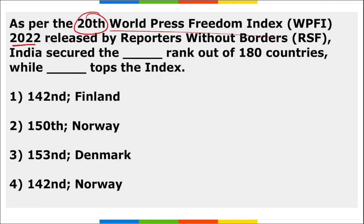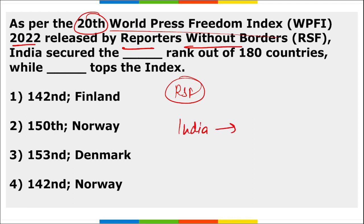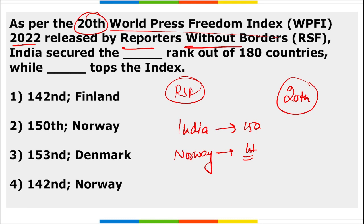The 20th World Press Freedom Index was released by Reporters Without Borders. India's rank in this index is 150. Norway topped the index at first position. This was the 20th edition of the World Press Freedom Index.